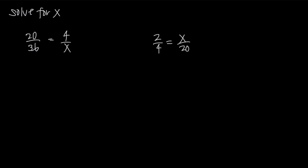Now, a proportion is just two ratios or two fractions set equal to one another. For example, in this problem I have 20 over 36 equal to 4 over x. So I have two fractions or two ratios that are set equal to each other. What I'm really asking is: if 20 is to 36, then 4 is to what? Because I have this x here and I'm trying to solve for x. I want to know what's the same relationship if instead of 20, I take 4.